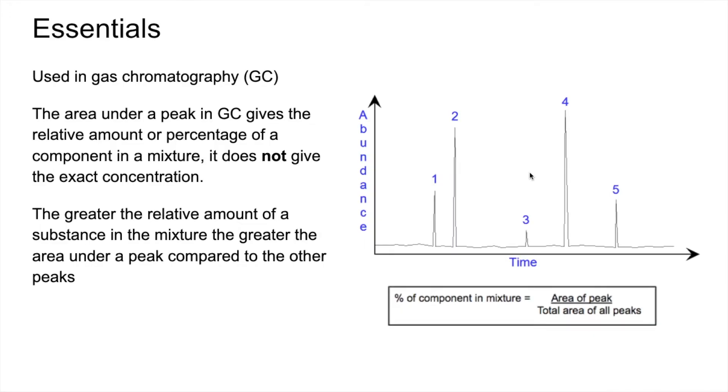In terms of percentage component in the mixture, we take the area under one of the peaks and divide that by the total area of all the peaks to get the percentage of that component. So the calibration curve is used to determine the concentration of the substances analyzed by gas chromatography. So we'll look at how to do the calibration curve now.